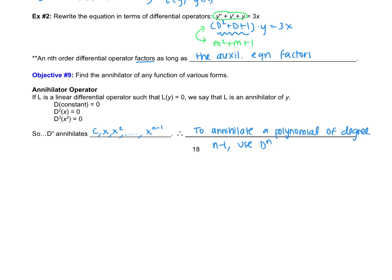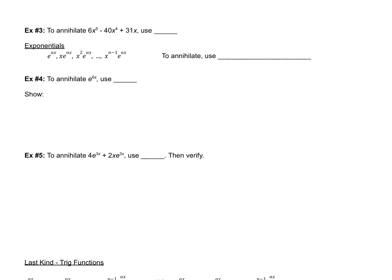Let's use this idea in example 3. If we want to annihilate 6x⁵ − 40x⁴ + 31x, we look at the term with the highest power, which is x⁵. So we would need to use D⁶.